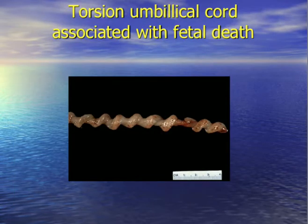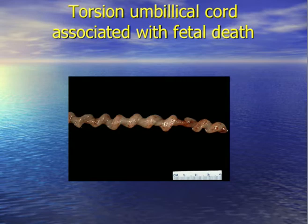The next picture shows a very tightly coiled umbilical cord, which is associated with fetal death. It's not completely clear whether this contributes to fetal death or is an effect after the fetus has passed away in utero, but this is how we describe a hyper-coiled umbilical cord.